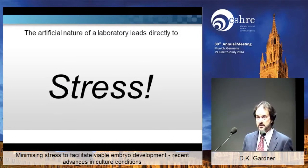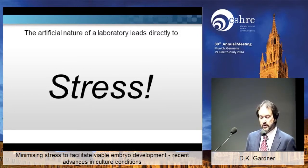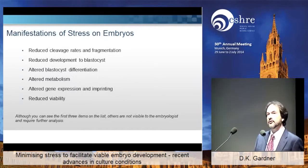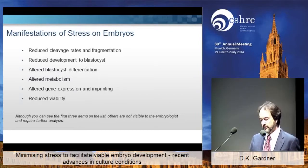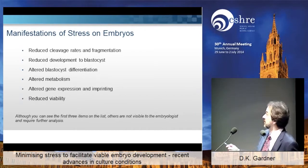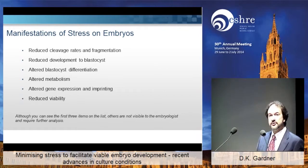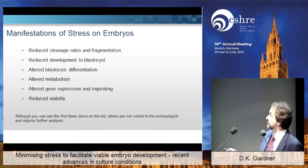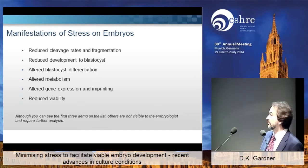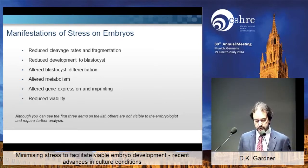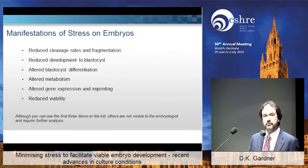As we work in vitro, we create stresses, and sometimes we don't even know we're doing it. If you have a stress in the laboratory, one of the first things you'll notice is slower embryo development. But things you can't actually see that we can measure are altered metabolism and gene expression — we can quantitate those — culminating in reduced viability. So stress is a real issue when we work in vitro.